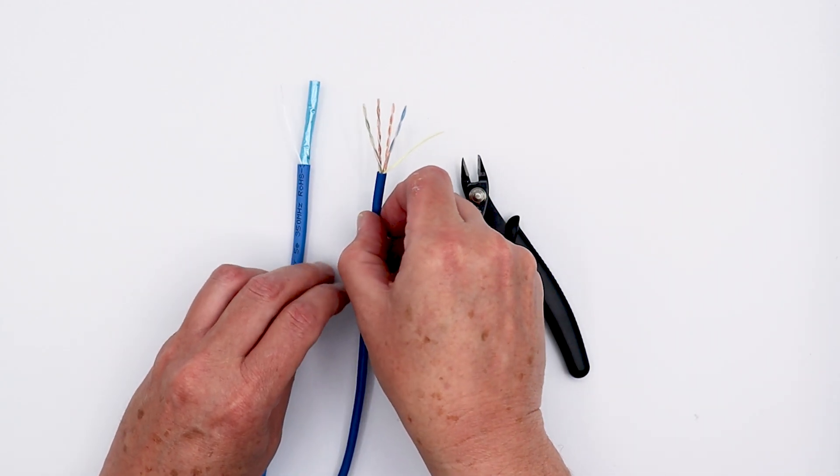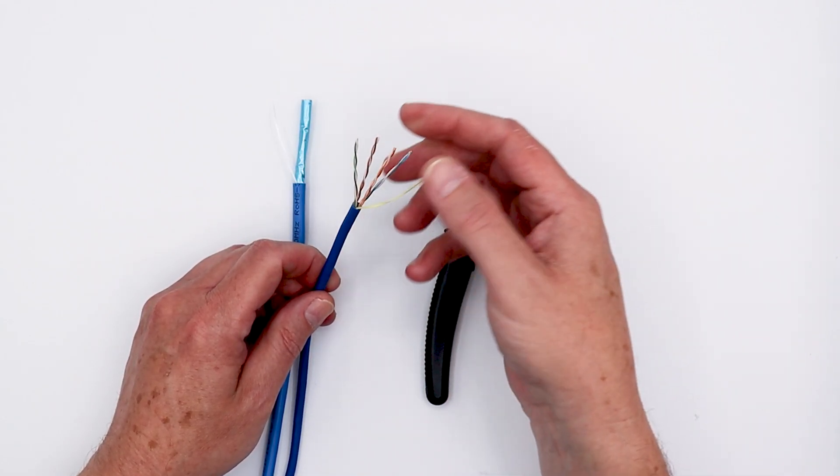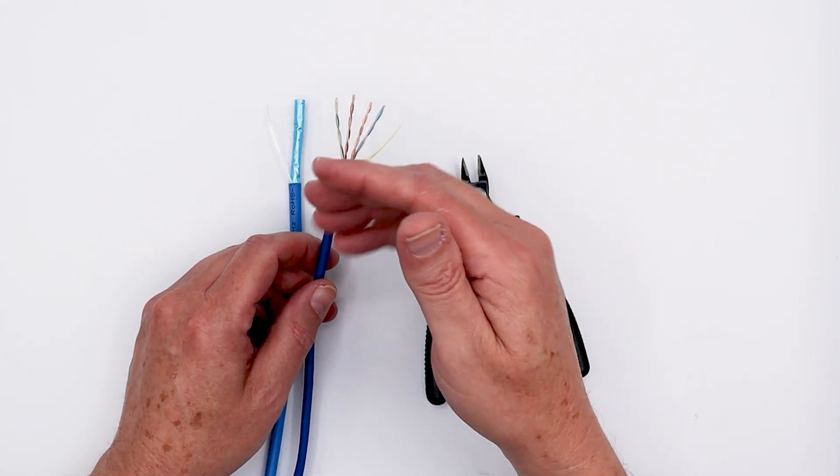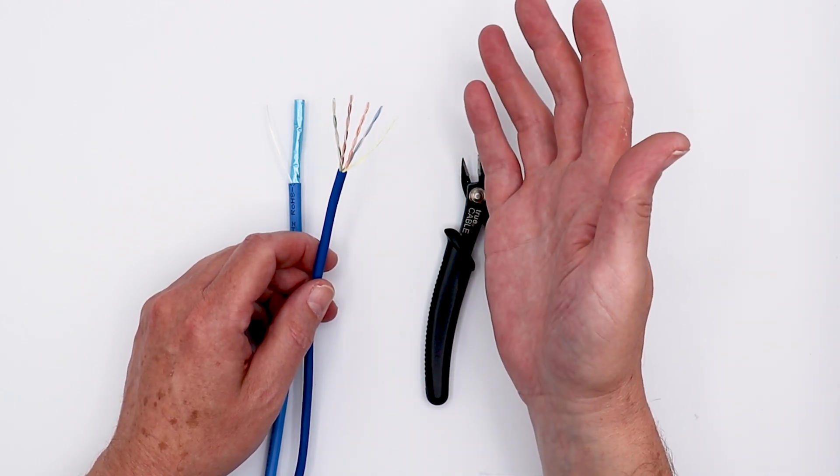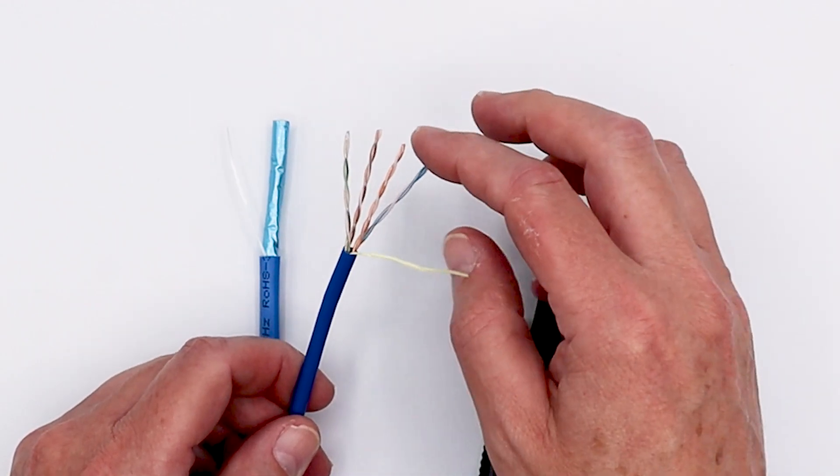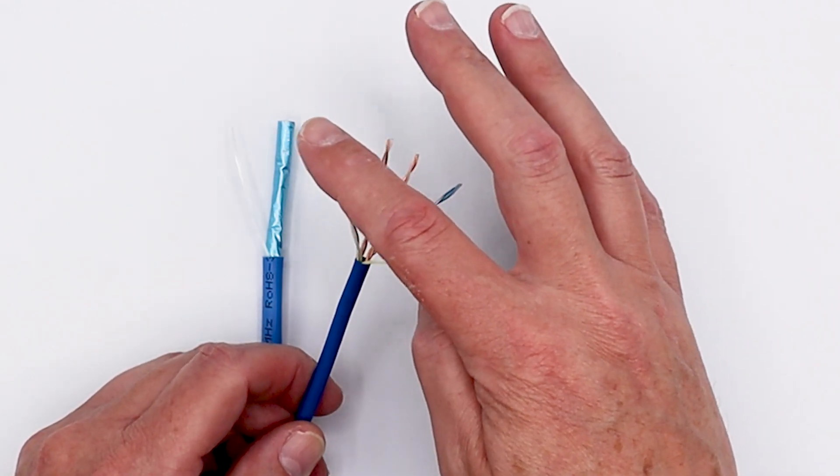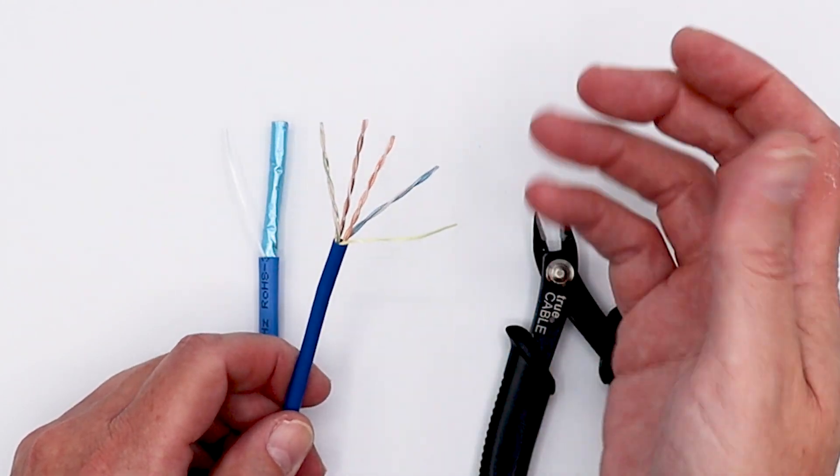With unshielded cable, the construction is very simple. Again, we're talking about Cat5e, so there's no internal spline. But otherwise, this is going to be pretty much the same as any other, whether it's Cat6 or Cat6a. You'll have a ripcord in the cable. You'll have these four pairs of eight wires twisted into blue and orange, brown, and green.